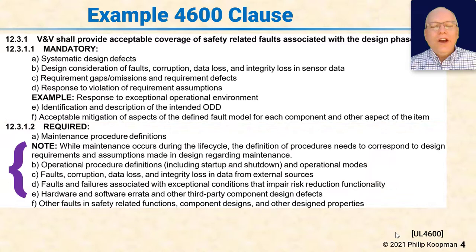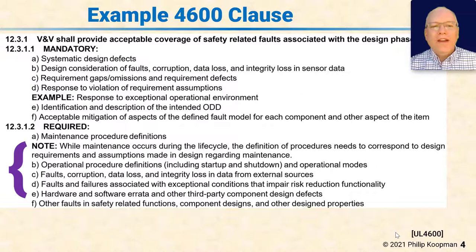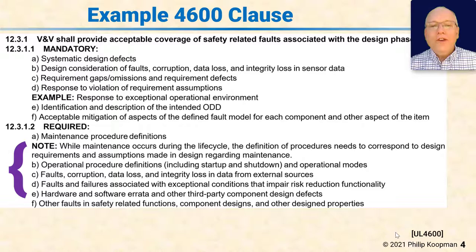Every clause also has a required section — these are almost mandatory. If they apply to your system, you have to cover them in your safety case, but there are some systems for which they might not apply. For example, 12.3.1.2A covers maintenance procedure definitions. It's conceivable that a very simple system might have absolutely no maintenance whatsoever. If that's the case, you can say you're going to deviate from this prompt element and explain why. You do not have to address prompt elements that don't apply, but if it's required, you must write down that it does not apply and explain why.